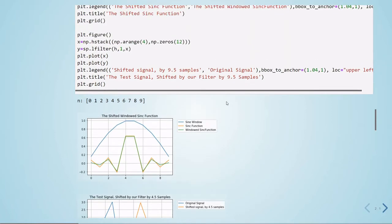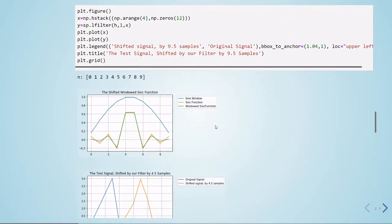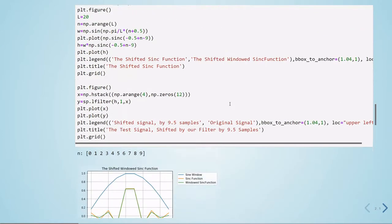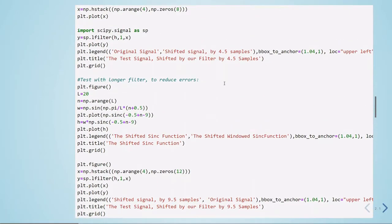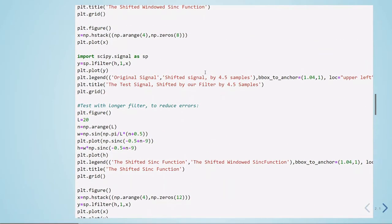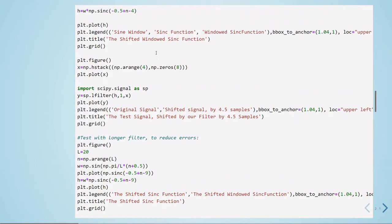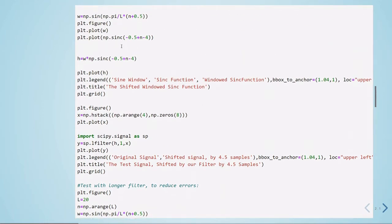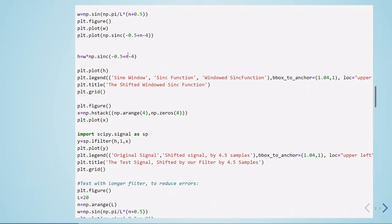So we will use this windowed sinc function and we will filter a test signal using it. So this is our next step here. Now we are importing scipy to use this L filter. And we are filtering our test signal by the impulse response that we obtain here by applying a window, a sine window to a sinc function.